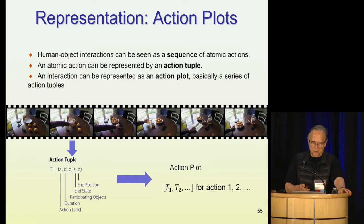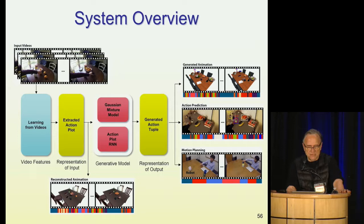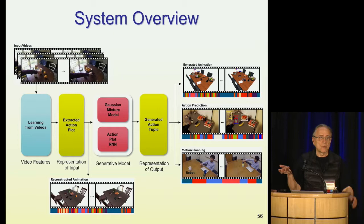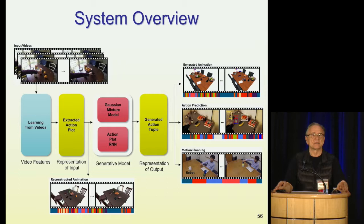Here is an overview of the system we have built. Starting from the left, you can see the learning component from videos and the extraction of the actual plot present in that video. That feeds into the generative model, which again has two components: the action plot component — the overall strategy for accomplishing the goal — and then the Gaussian mixture model that deals with the continuous aspect: the actual realization of grasps, moves, placements, and so on, followed by generation of the synthetic interaction.